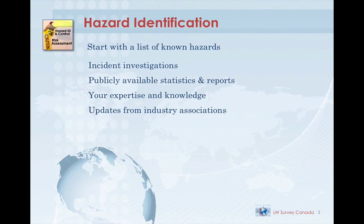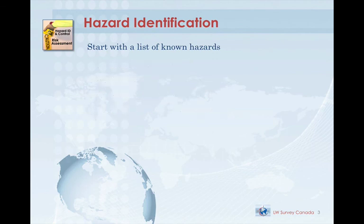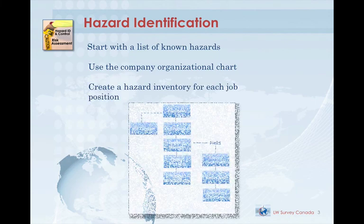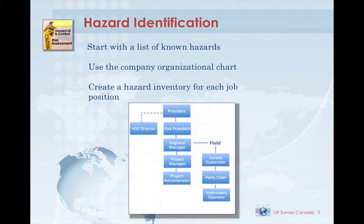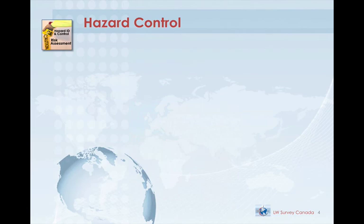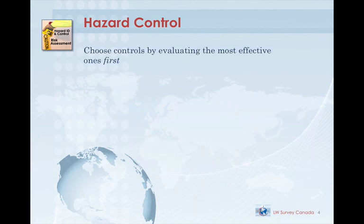Not all the hazards we list will apply to every job title, so we go down the company organizational chart and create a separate hazard inventory for every position within our company. After those hazard inventories are completed, we need to either eliminate or reduce the hazards we've identified using controls.